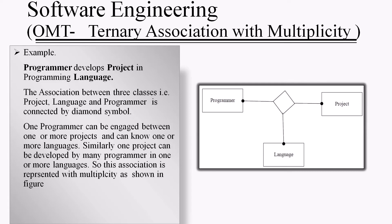For ternary association with multiplicity, the same example is used: Programmer, Project, and Language. The association between these three classes is connected by a diamond symbol, but multiplicity symbols are also used. One programmer can be engaged in one or more projects and can know one or more languages. Similarly, one project can be developed by many programmers in one or more languages. A solid ball represents the multiplicity symbol in the figure.